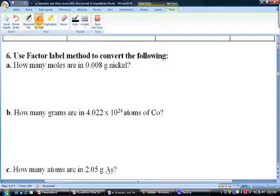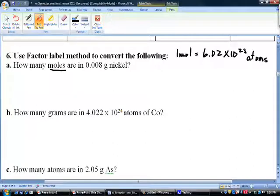Remember, factor label method is what we worked on in Unit 1 and Unit 2 when you learned to work with mole calculations. Here we are dealing with mole calculations. There are two conversion factors you need: one is that one mole equals 6.02 times 10²³ atoms, or other small things like atoms.